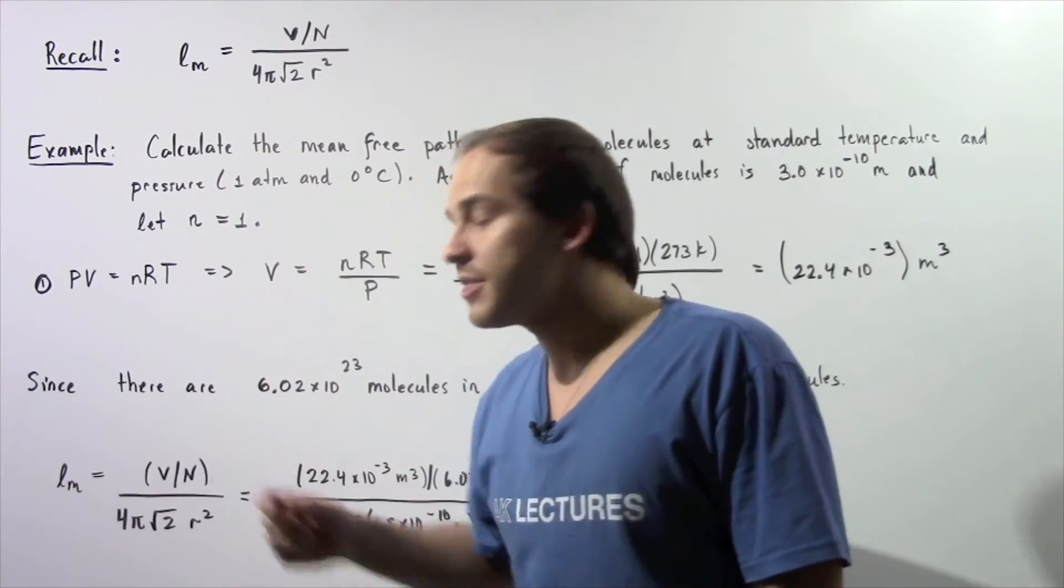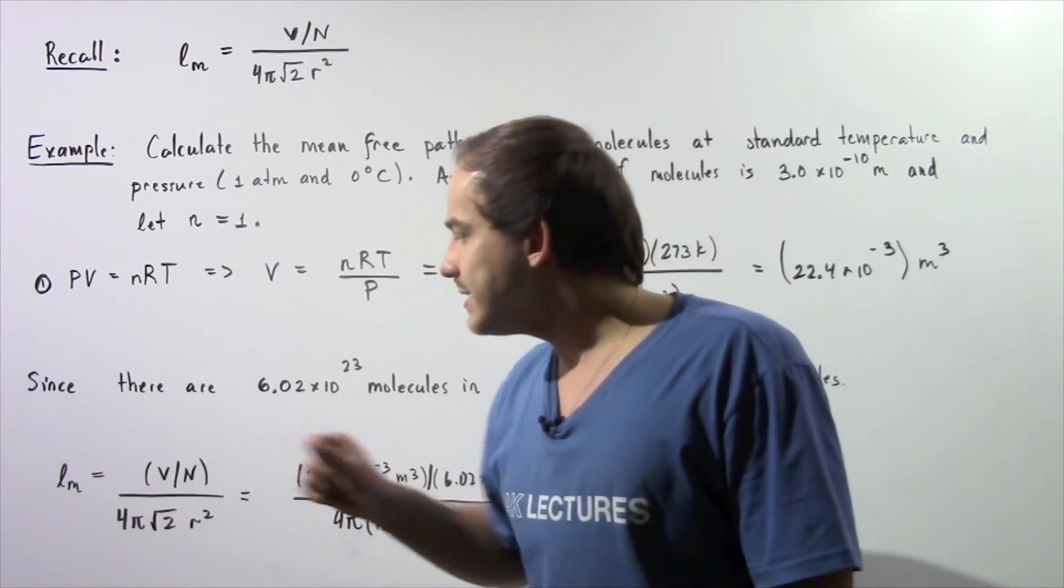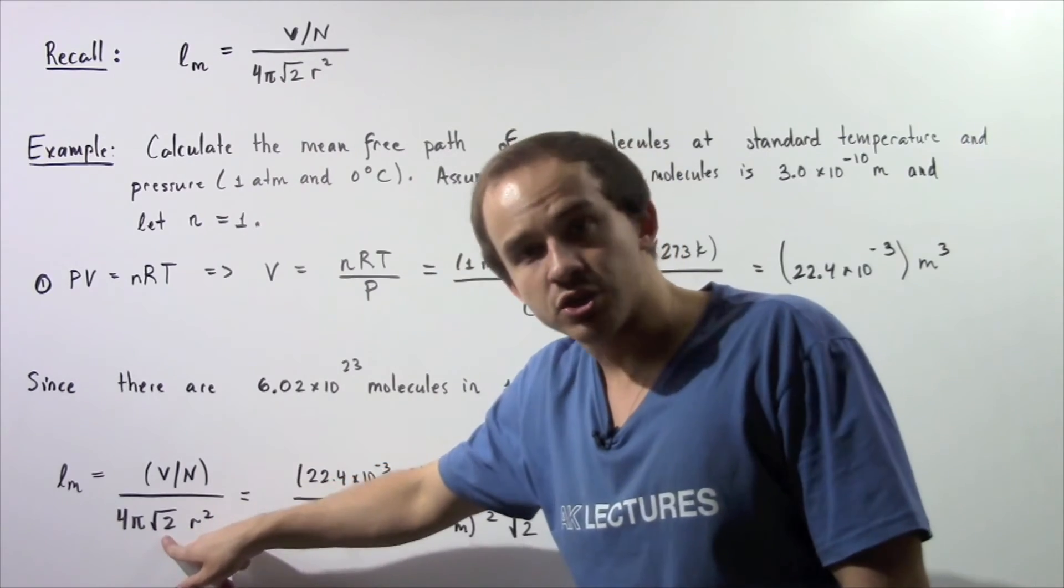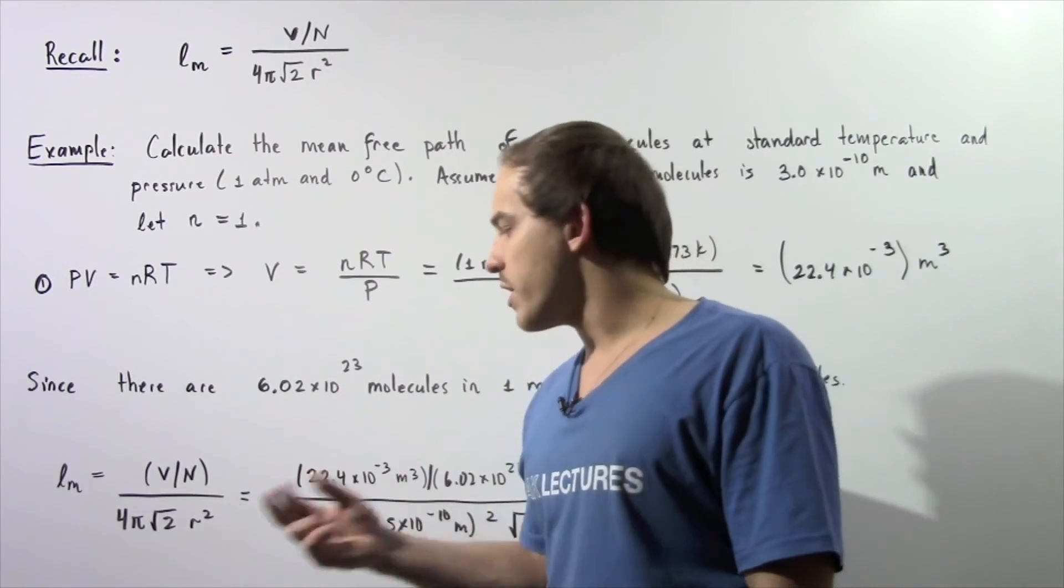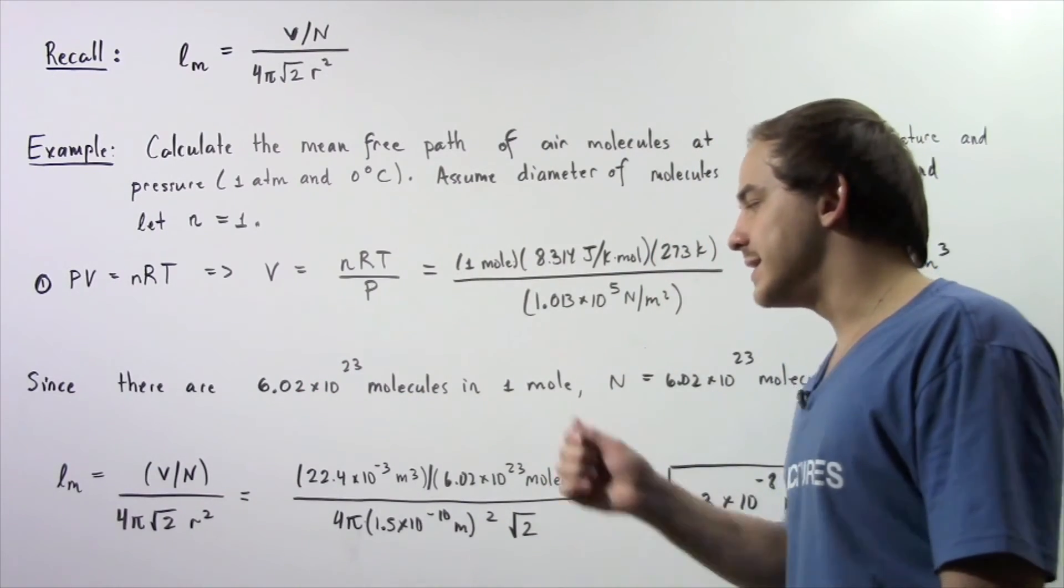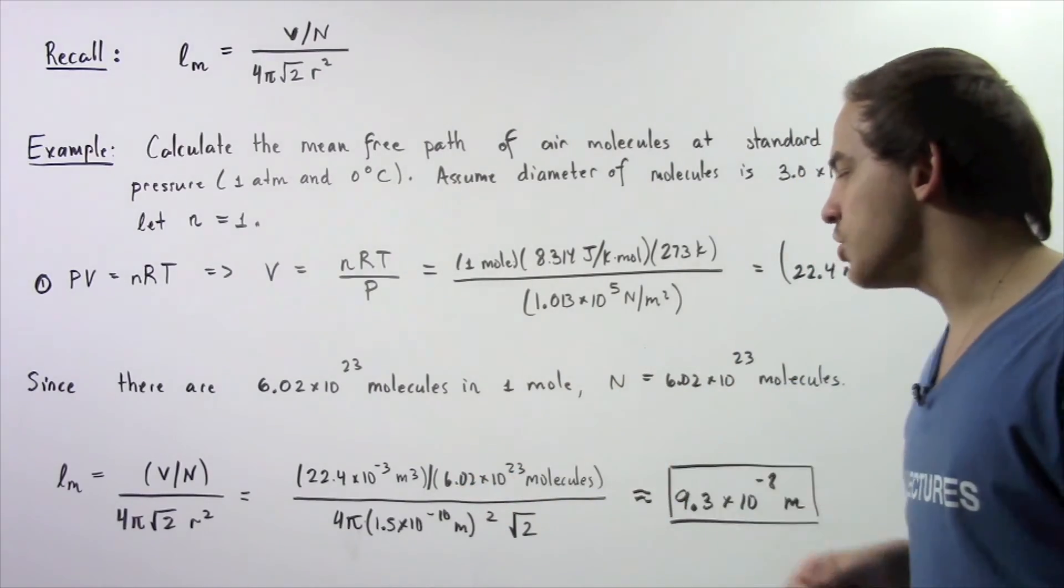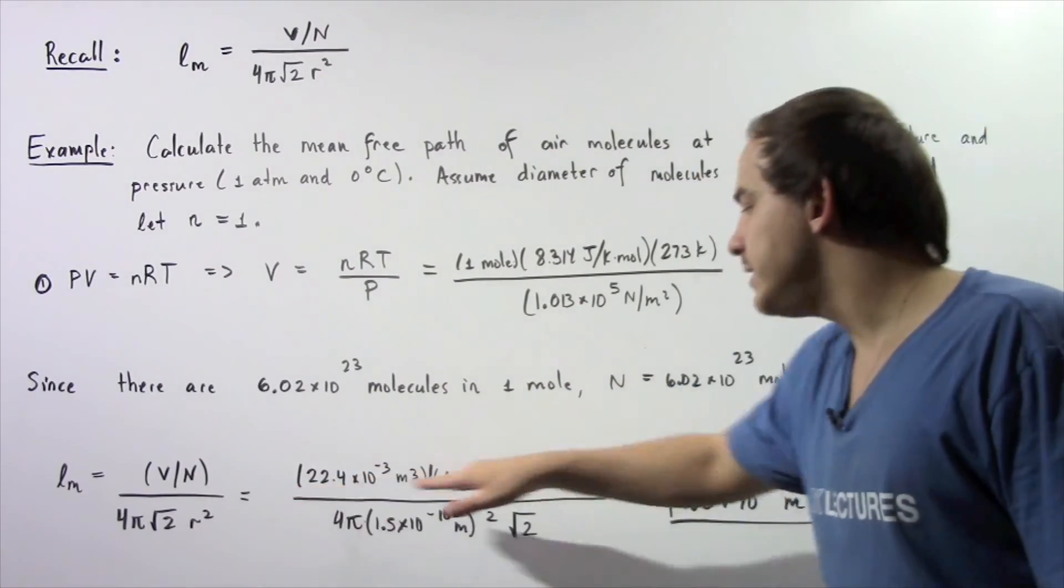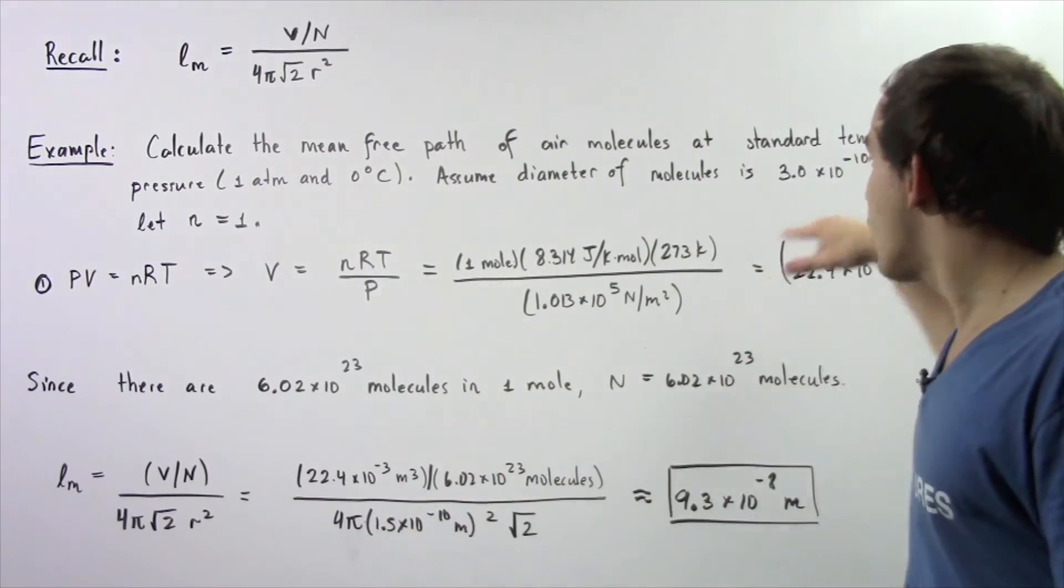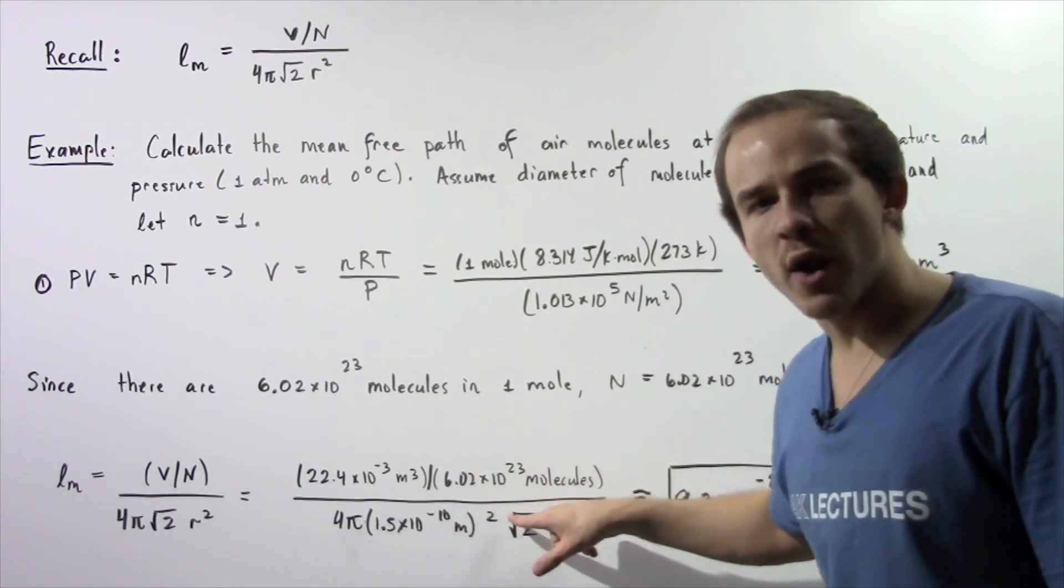Our mean free path is equal to V divided by N divided by 4π√2 multiplied by the square of the radius. So 22.4×10⁻³ meters cubed divided by 6.02×10²³, and we divide that by 4π√2 multiplied by our radius 1.5×10⁻¹⁰ meters squared.